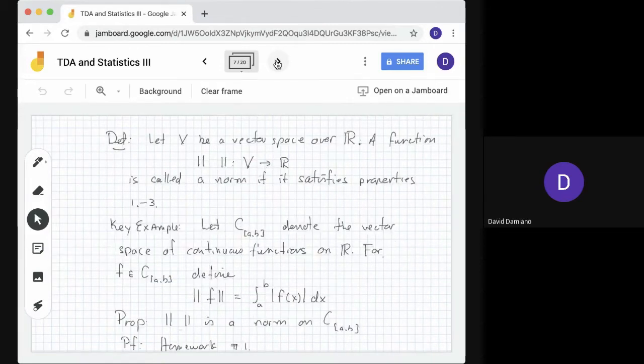So this is our motivation. If we have a function on a vector space V to the real numbers, we'll say it's a norm if it satisfies properties 1-3. An important example for what we're going to do is with continuous functions. If we have an interval [a,b] in the real numbers and look at continuous functions on that interval, the norm of a function f is the integral from a to b of |f(x)|dx. It's important that these are continuous functions because we can integrate a continuous function on a closed interval.